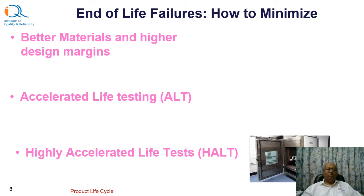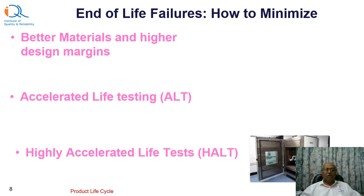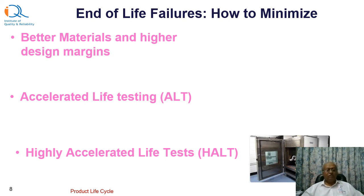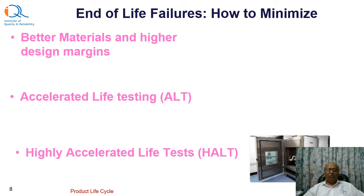Again, we have another technique called highly accelerated life test, or HALT. HALT is performed at the initial development stage of the product and is sometimes called discovery testing. The purpose of HALT is to discover latent failure modes — the product is subjected to very high stress levels generally not observed in real life. The idea is not to find out the life of the product, but only to find the failure modes so the designer can address those, improve the design, and perform the HALT test again. This is performed at the development stage.